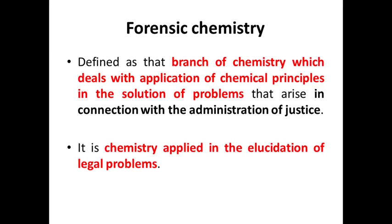What is forensic chemistry? Forensic chemistry, as defined, is that branch of chemistry which deals with the application of chemical principles in the solution of problems that arise in connection with the administration of justice. Forensic chemists are professional chemists who specialize in forensic work — they perform examinations in their field and appear in court as expert witnesses. Basically, forensic chemistry is chemistry applied to the criminal justice system or the administration of justice.